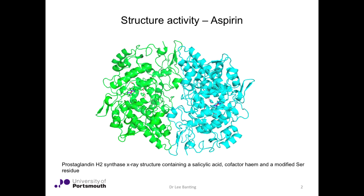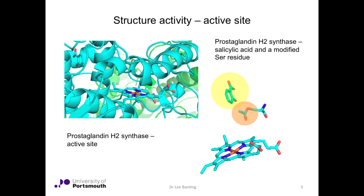Shown on the screen is the X-ray structure containing a salicylic acid, which we'll discuss in a moment, a cofactor heme which is in the active site of the enzyme, and a modified serine residue which appears in this particular crystal structure — the relevance of which will become apparent in a moment. And there's a link to that site.